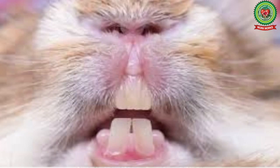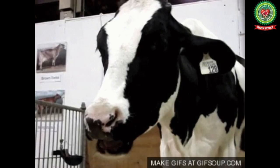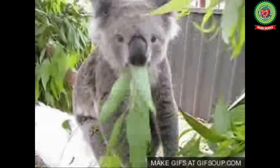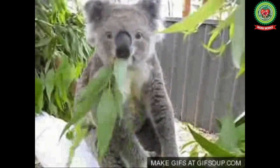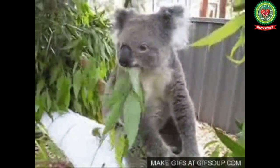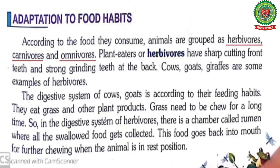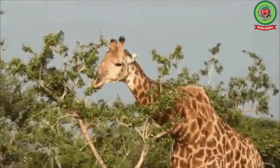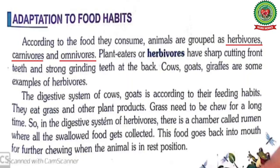Herbivores have sharp cutting front teeth and strong grinding teeth at the back, which help them in easy chewing of the plants they eat. The examples of herbivores are cows, goats and giraffes.